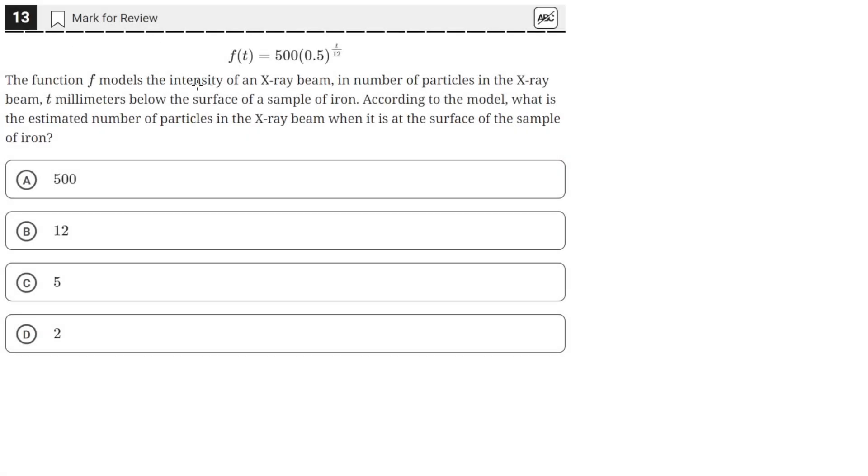The function f models the intensity of an x-ray beam in number of particles in the x-ray beam t millimeters below the surface of a sample of iron.